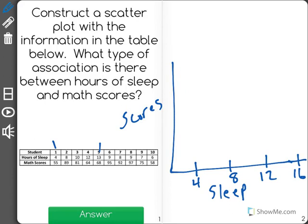And going up I can see I have, for math scores, I can see I have a low of 55 and it looks like a high of 95. So I'm going to insert a squiggle at the bottom here and that will represent that I have skipped some numbers.